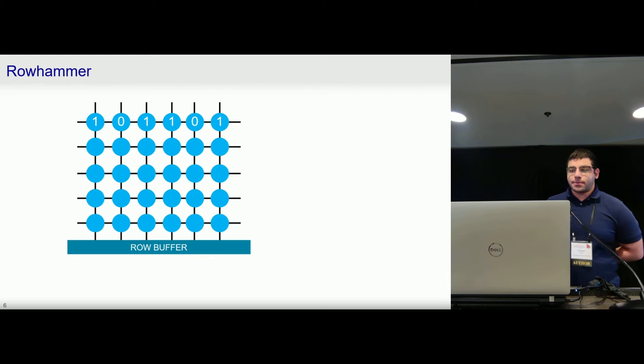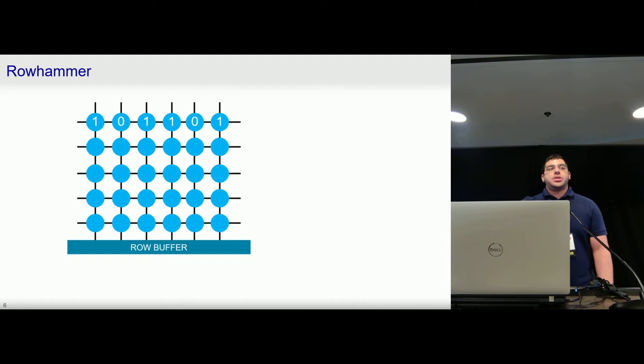So before I go into that, I'll give a quick overview of Rowhammer. This vulnerability takes advantage of the nature of DRAM. In particular, a DRAM array consists of many cells that each use a capacitor to store a bit value. For example, a fully charged capacitor might store a one and a discharged capacitor might store a zero or vice versa.